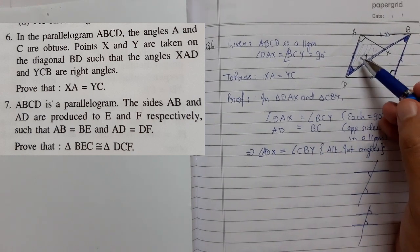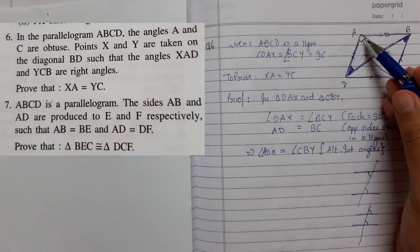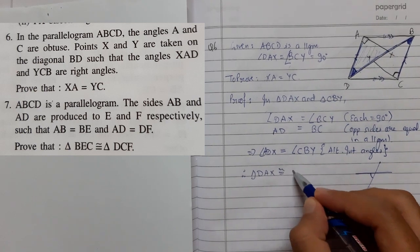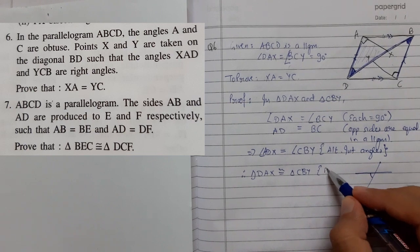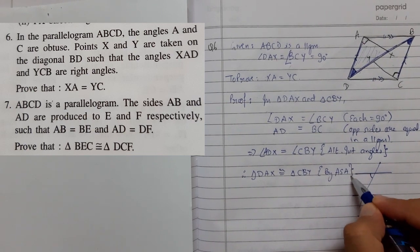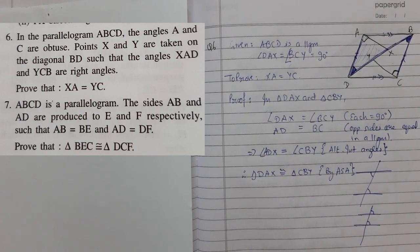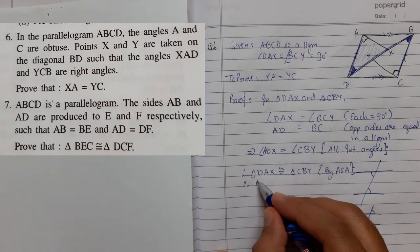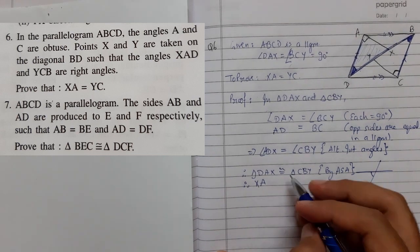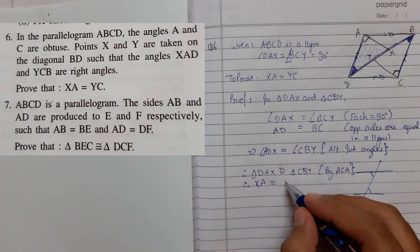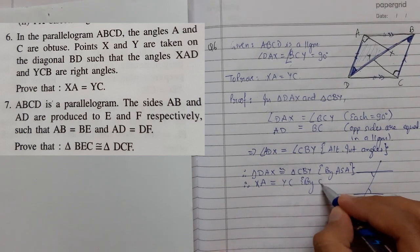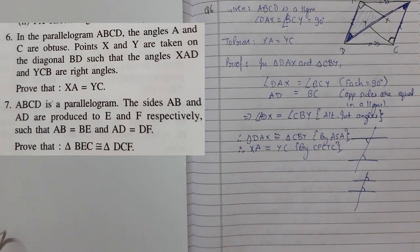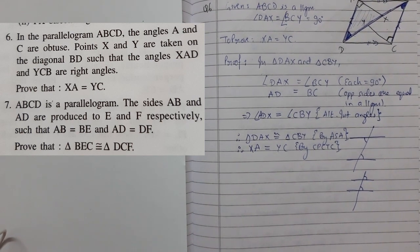We now have three things: angle, side, angle. Therefore, triangle DAX is congruent to triangle CBY by the Angle-Side-Angle congruency criterion. What we need to prove is XA equals YC — that follows by CPCTC. Therefore XA equals YC by CPCTC.